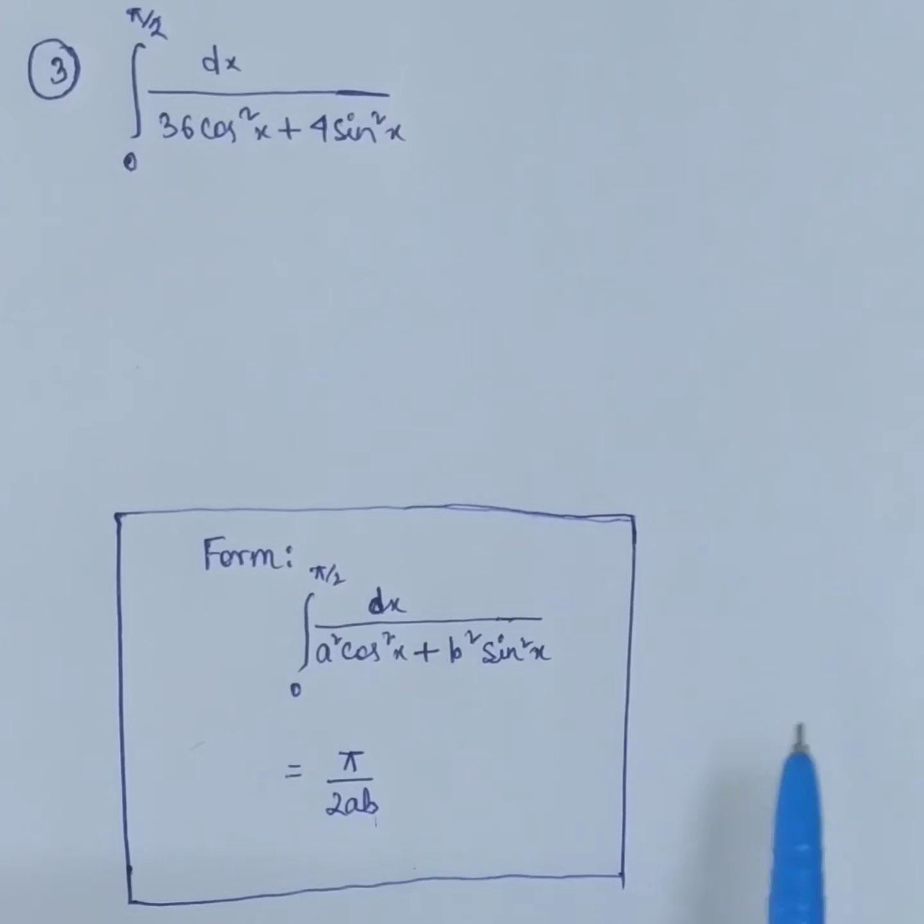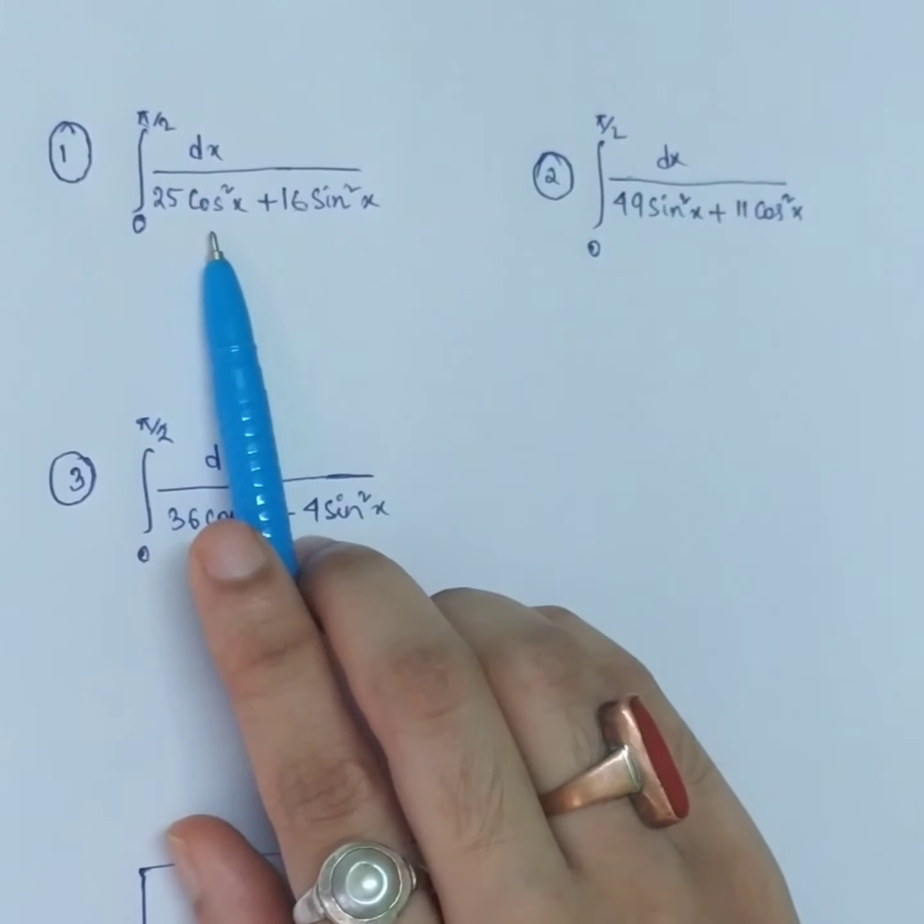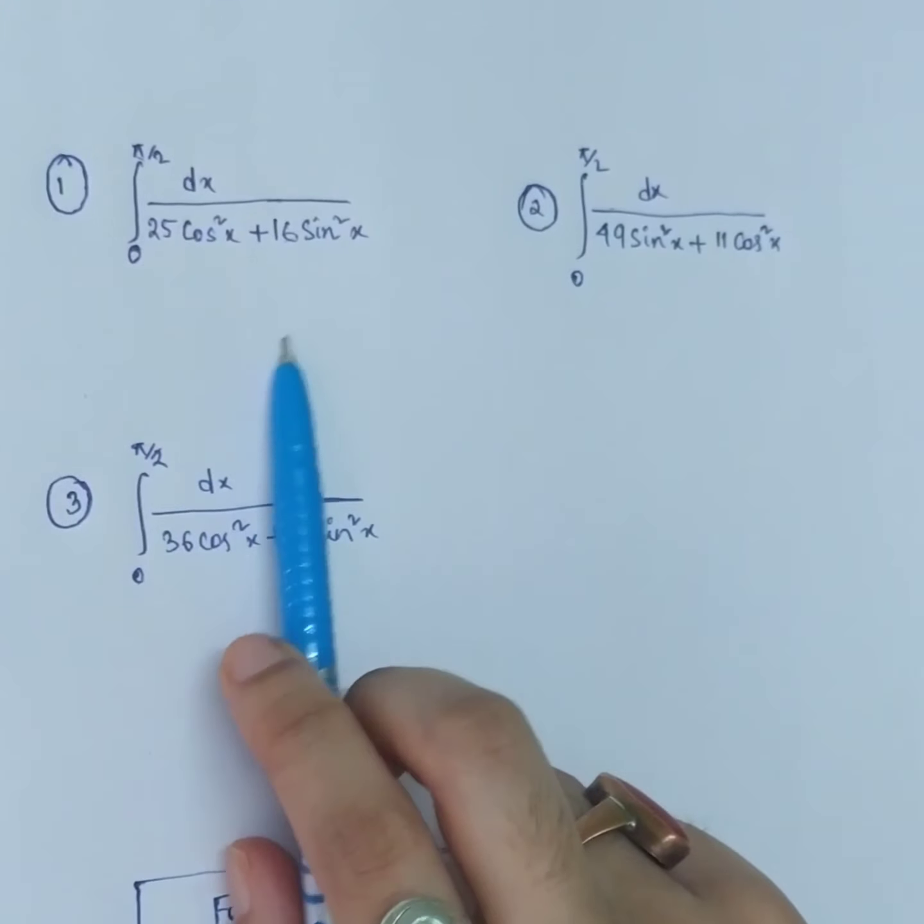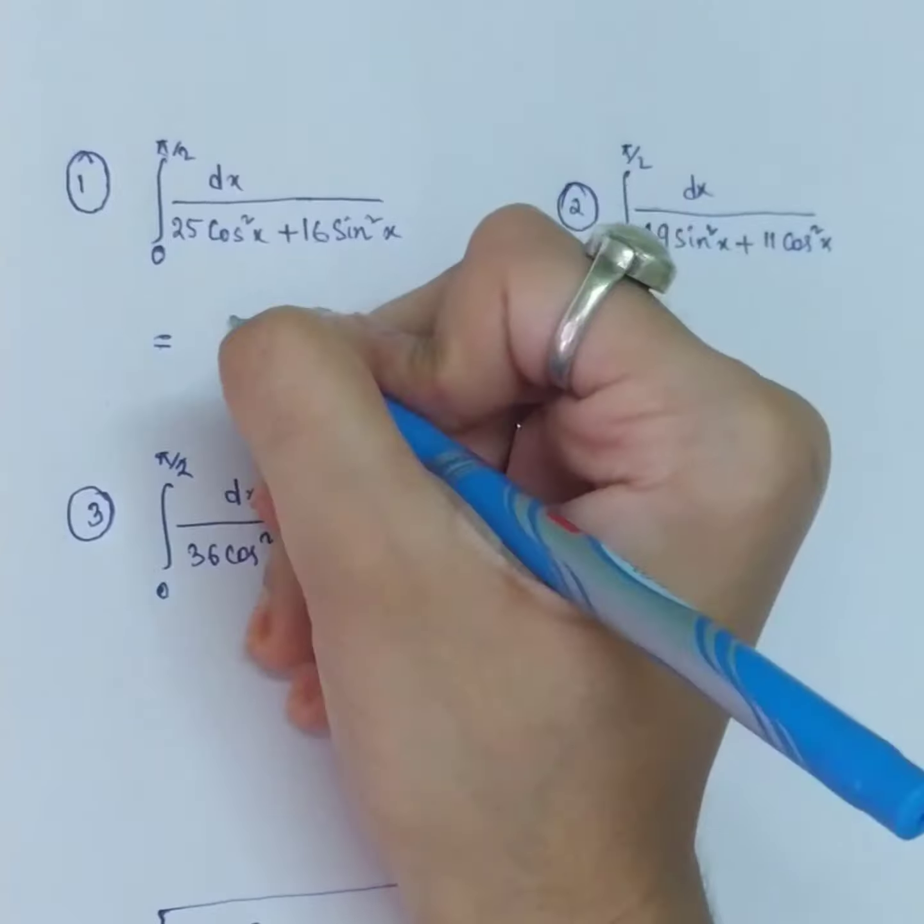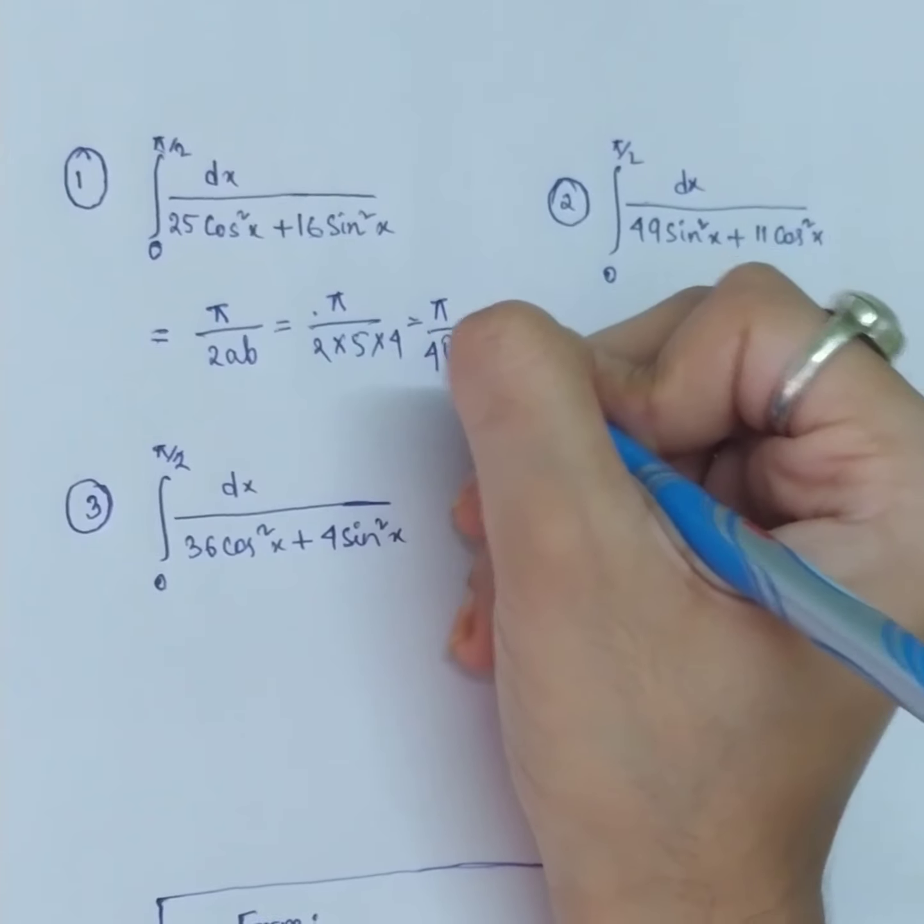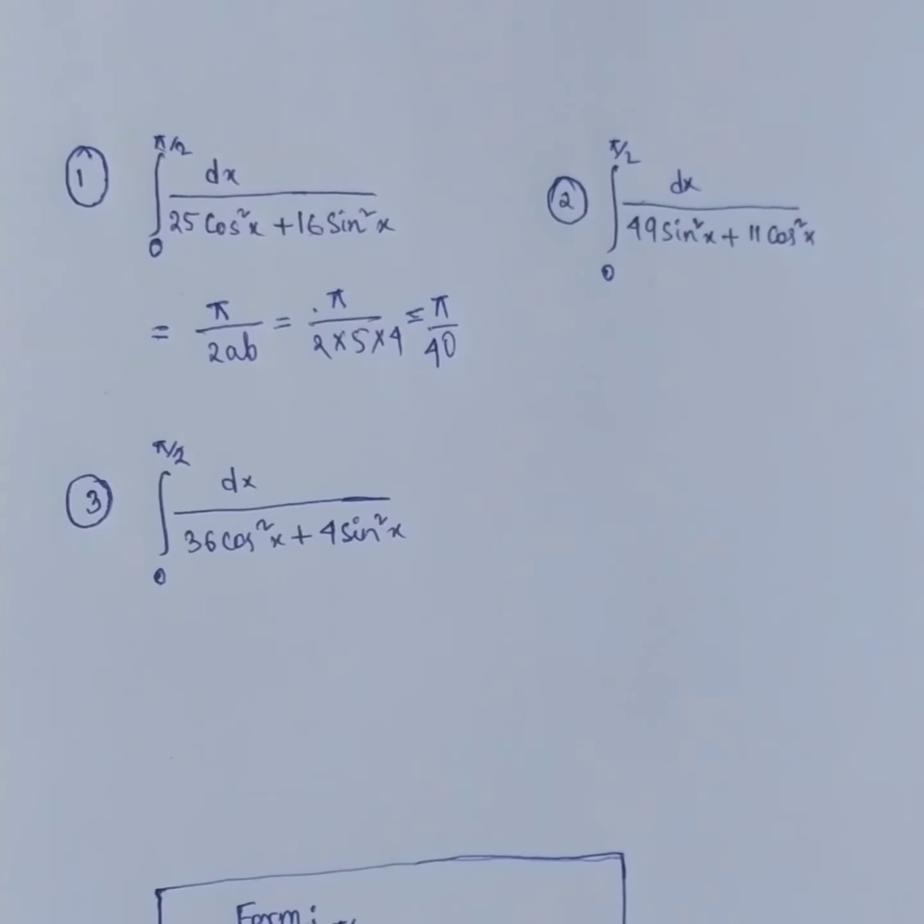So our first question is ∫₀^(π/2) dx/(25cos²x + 16sin²x). So here you have a² = 25 and b² = 16, so a is 5 and b is 4. So what was the formula? π/2ab, right? Yes, so here you have π/2ab which equals π/(2×5×4) which will be π/40. Look how simple! Remember one thing: I have explained you here, this is why I took more time, but if I don't explain then I have less time to solve it.